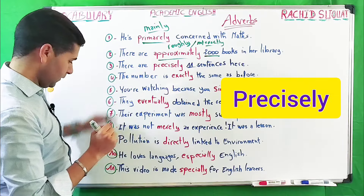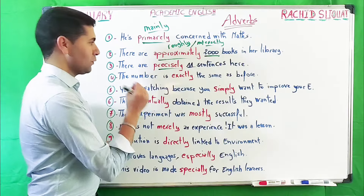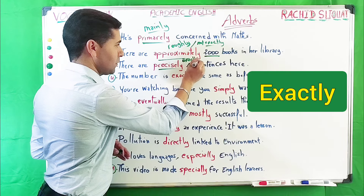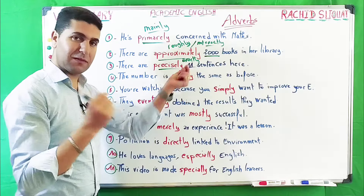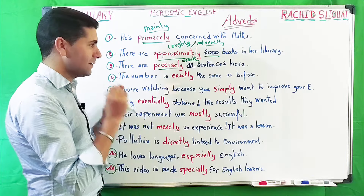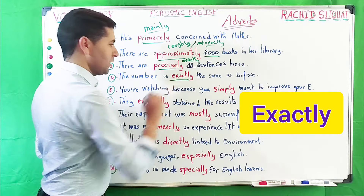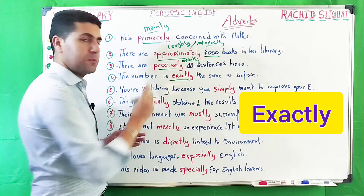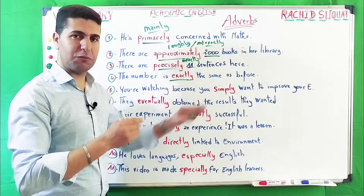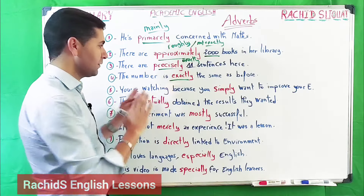'There are precisely 11 sentences here.' If you count these sentences, there are exactly — precisely — 11 sentences. This is a precise number. We can say 'exactly' or 'precisely'; they mean the same thing. The number is exact, it is true. When I say 'exactly the same,' there is no difference — 11 is 11, 12 is 12, 2,000 is 2,000. Exactly or precisely: no difference.